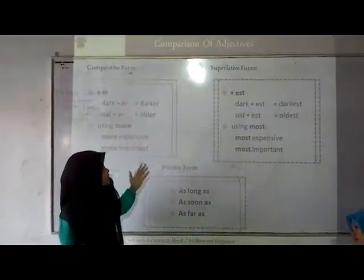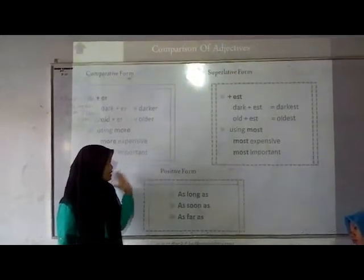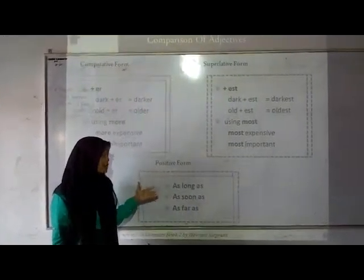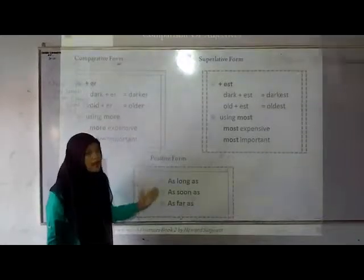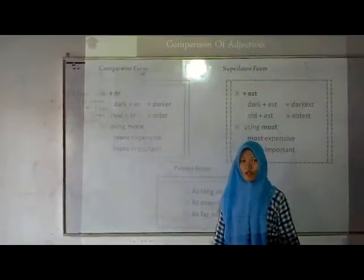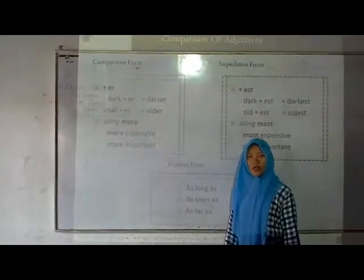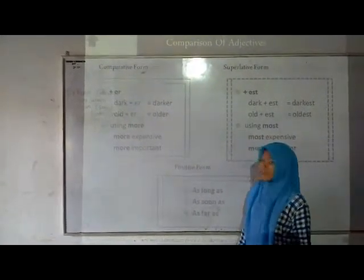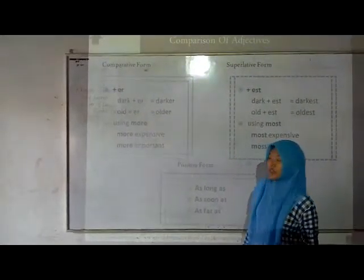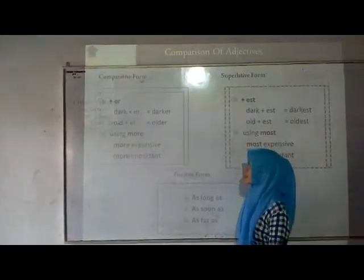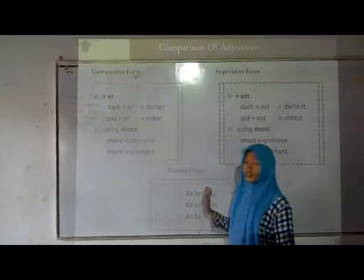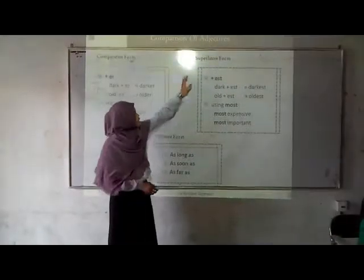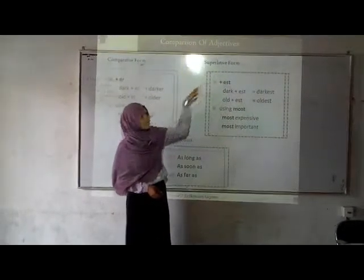Now I will explain the comparison of adjectives. The positive form tells about a thing that has the same quality as another. For example: as long as, as soon as, as fine as. The second is the comparative form — it means the thing is more or less than the other one. For example, dark — adding -er becomes darker; old — adding -er becomes older; easy — adding -er becomes easier. Or using more: more expensive and more important.